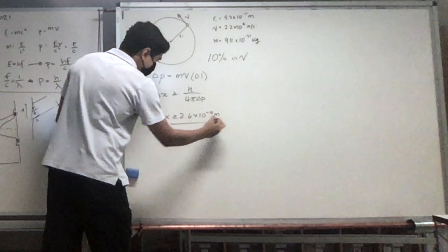So that is trying to show that when you apply uncertainty to the position of an electron, you get results that are greater than the atom, which doesn't make sense. Now I'm going to go into a little bit more about the wave function and then show it in the model of the atom.